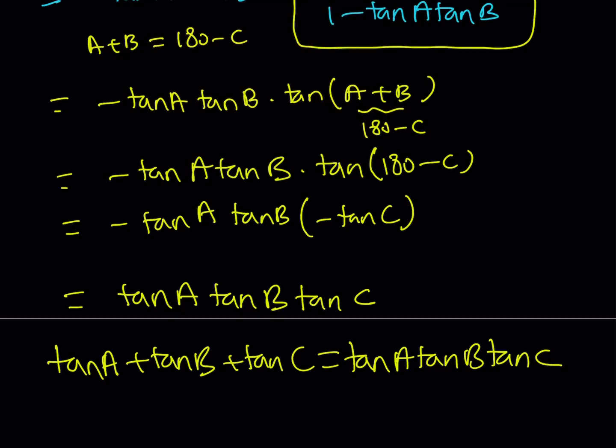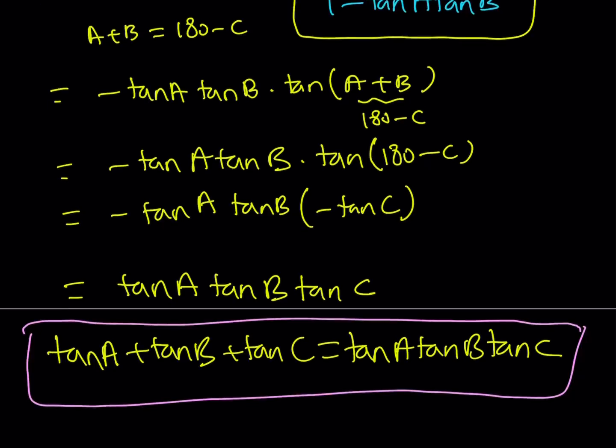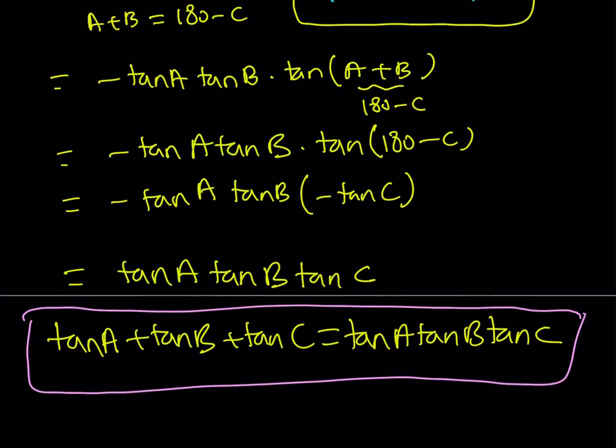You can use the tangent values 1, 2, and 3 — they satisfy this equation, meaning if the tangents of the angles are those values, it's a triangle. That brings us to the end of this video. Thank you for watching, I hope you enjoyed it. Please let me know — don't forget to comment, like, and subscribe. I'll see you tomorrow with another video. Until then, be safe, take care, and bye-bye.